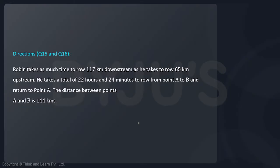Our next question comes in a set of two questions, question number 15 and question number 16. Robin takes as much time to row 117 kilometers downstream as he takes to row 65 kilometers upstream. So let's decode this amount of information first. We'll go by the conventional assumptions: X as the speed of boat in still water and Y as the speed of stream.